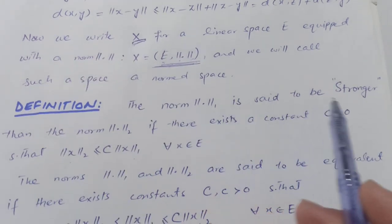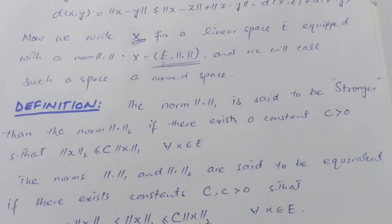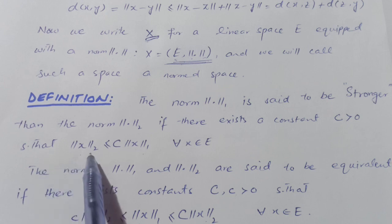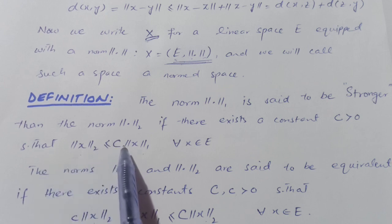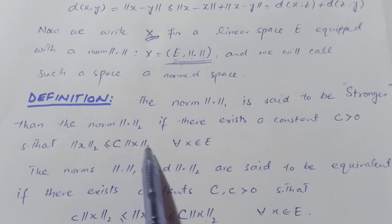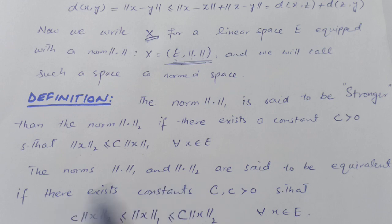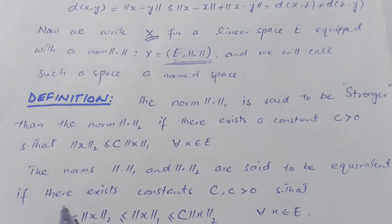Next, we have another definition: stronger norm. A norm ‖·‖₁ is said to be stronger than norm ‖·‖₂ if there exists a positive constant C such that ‖x‖₂ ≤ C‖x‖₁ for all x in the vector space. The norms ‖·‖₁ and ‖·‖₂ are said to be equivalent if there exist constants C and c such that both ‖·‖₁ is stronger than ‖·‖₂ and ‖·‖₂ is stronger than ‖·‖₁.